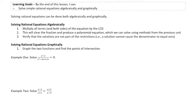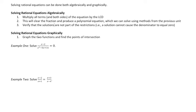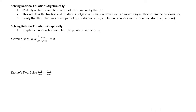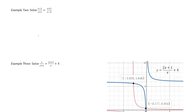Then we have to verify that the solutions generated when we solve the polynomial equation are not part of the restriction. We'll have a set of restrictions — values of x that are not permissible because they would cause the denominator to equal zero. The other way to solve rational equations is graphically, and we'll see that in the final example.